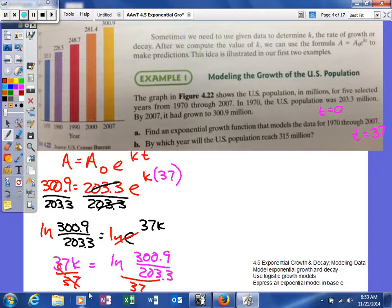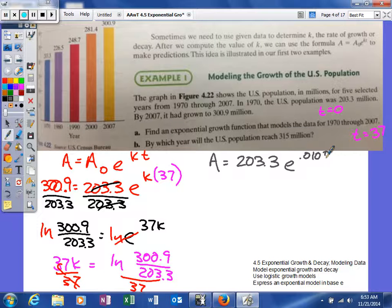Alright. So now we know what k is. What we can do is go back and plug back into our model. So we'll say A equals, our original amount won't change, so we'll still use this for our original amount. And it'll be e to the 0.0105, again that's not exact, it's a rounded value, times t. And then what we're trying to do is figure out when will the U.S. population reach 315 million. So now we're going to use this same formula that we actually created to help us find out what it'll be in the future. So this time we'll say 315.